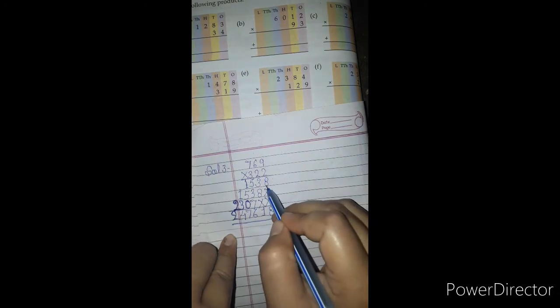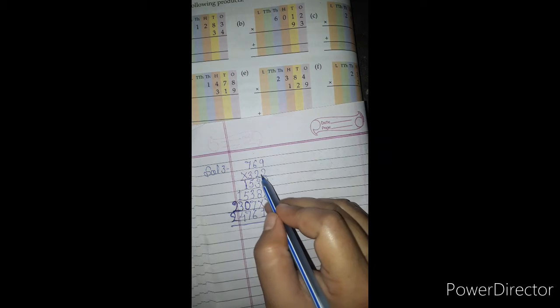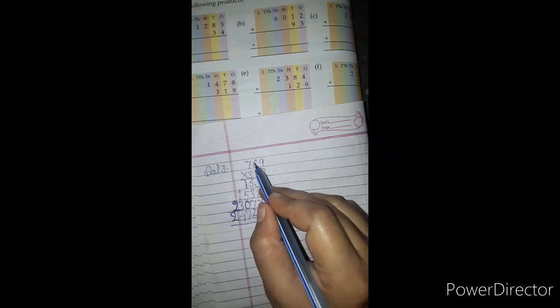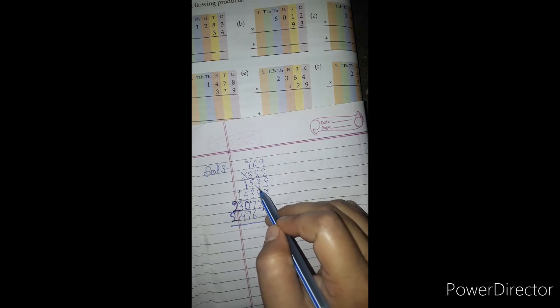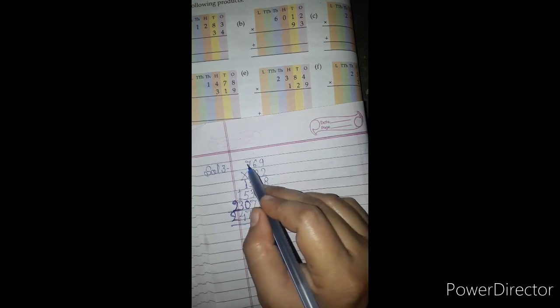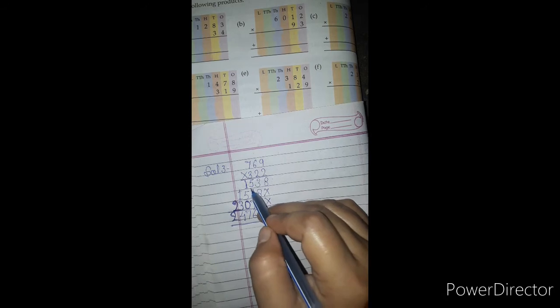2 times 9 is 18, write 8, carry 1. 2 times 6 is 12, add 1 is 13, write 3, carry 1. 2 times 7 is 14, add 1 is 15.